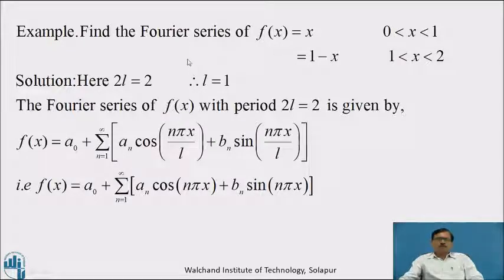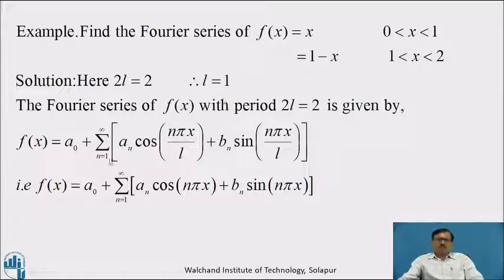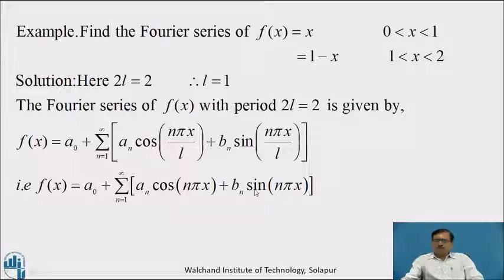Now we will see one more example. Find the Fourier series of f(x) = x when 0 < x < 1, and f(x) = 1 − x when 1 < x < 2. Here 2L = 2, therefore L = 1. The Fourier series with period 2L = 2 is given by: f(x) = a₀ + summation n=1 to infinity of aₙ cos(nπx) + bₙ sin(nπx).